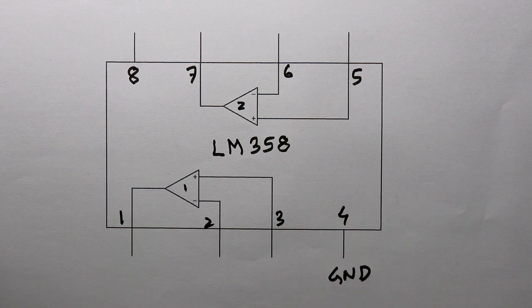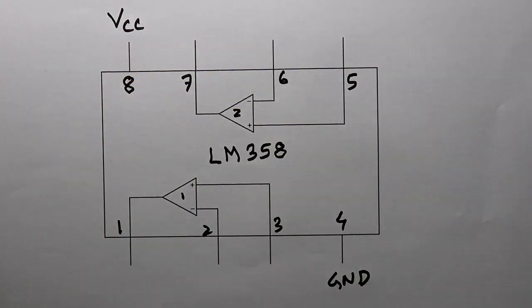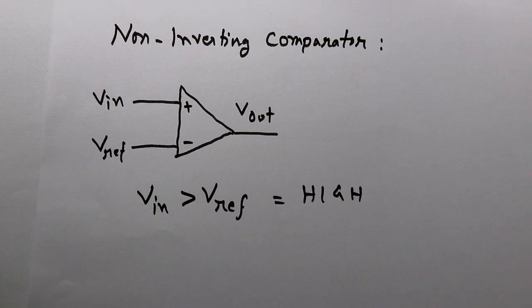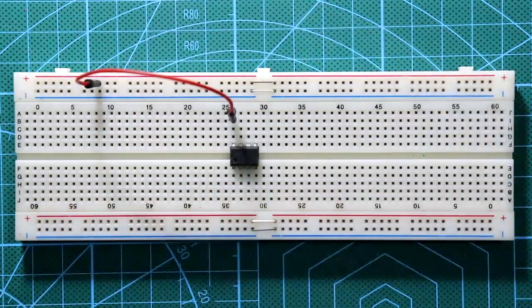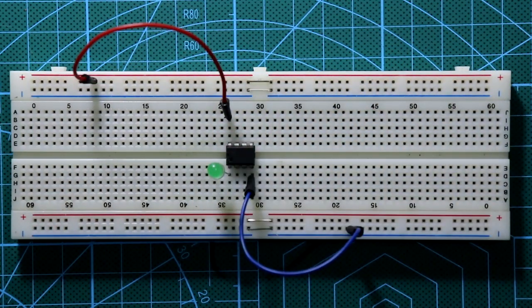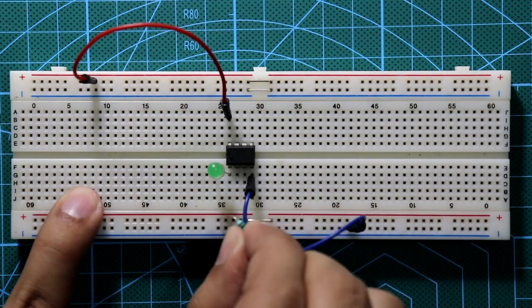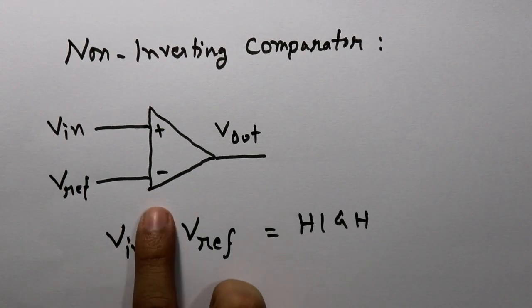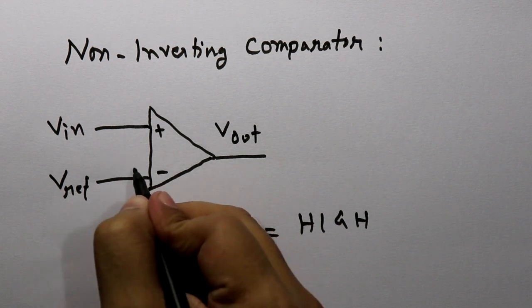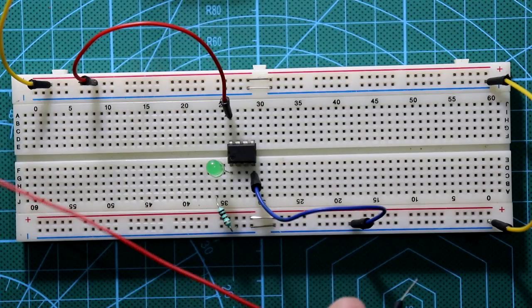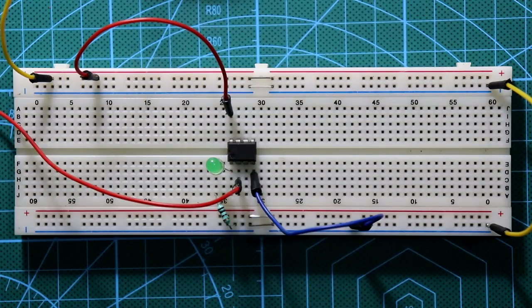We'll see only one comparator on the breadboard for this example. Pin number 8 is connected to VCC, pin number 4 is connected to ground, and pin number 1 is the output. The cathode of the LED is connected to ground through a 100 ohm resistor. The reference voltage is given to the inverting input — pin number 2 — and the input voltage to the non-inverting input — pin number 3. I am giving a reference voltage of 5 volts at pin number 2.